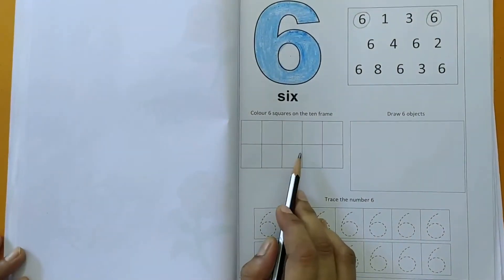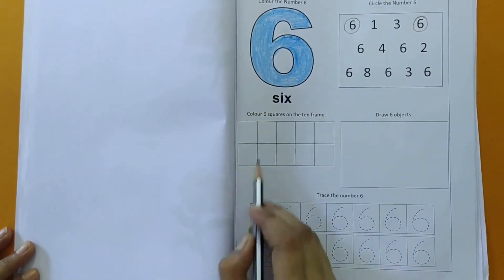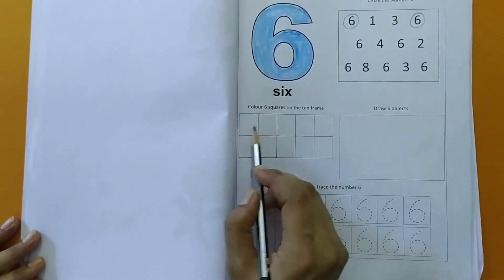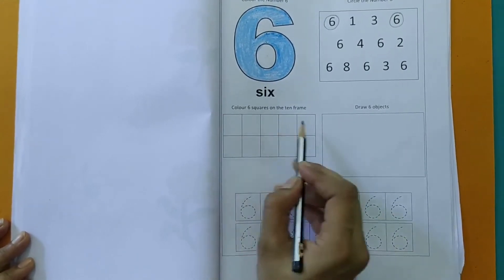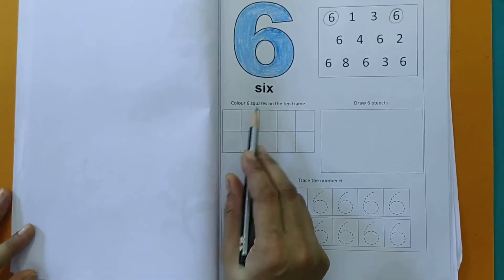The next activity is color 6 squares on the 10 frame. We have a frame over here wherein we see boxes. There are 10 boxes. So we have to only color 6 squares.